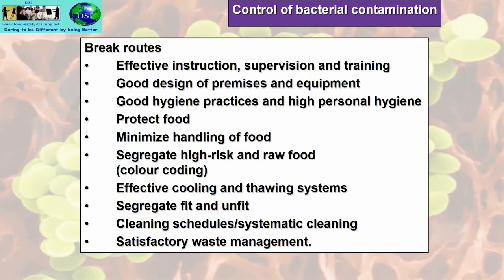We can also break contamination routes through effective instruction, supervision and training, good design of premises and equipment, high personal hygiene, protecting food and minimizing handling. Segregate high-risk and raw food using a color-coding system — especially color-coded preparation boards and knives. Use effective cooling and thawing systems, segregate fit from unfit food, maintain cleaning schedules and a satisfactory waste management system.